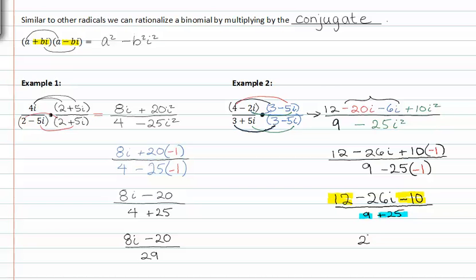In the numerator twelve minus ten is two and negative twenty six i is also left in the numerator. In the denominator we have nine plus twenty five. This gives us thirty four.